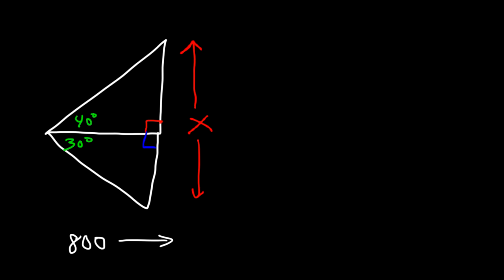Let's talk about how to solve certain right triangles, particularly if we have a two-triangle system. Say we have two right triangles adjoined to each other — this angle is 40 degrees and this one is 30 degrees. What is the value of X? You're given this distance of 800, which is the length of the blue line. X is the sum of h1 and h2.